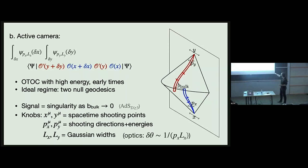You have a lot of knobs to adjust: shooting directions, shooting angles, Gaussian widths. If the widths are too fat, you'll just see a white signal and the image will be blurry. Depending on your geometry you may or may not get a good signal, but you have some knobs to play with — it's like a camera.